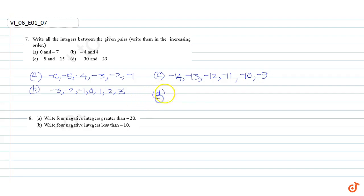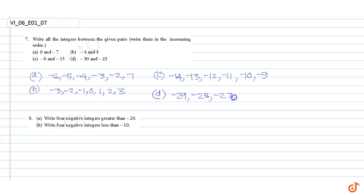Part d: between minus thirty and minus twenty three. The integers are minus twenty nine, minus twenty eight, minus twenty seven, minus twenty six, minus twenty five, and minus twenty four.